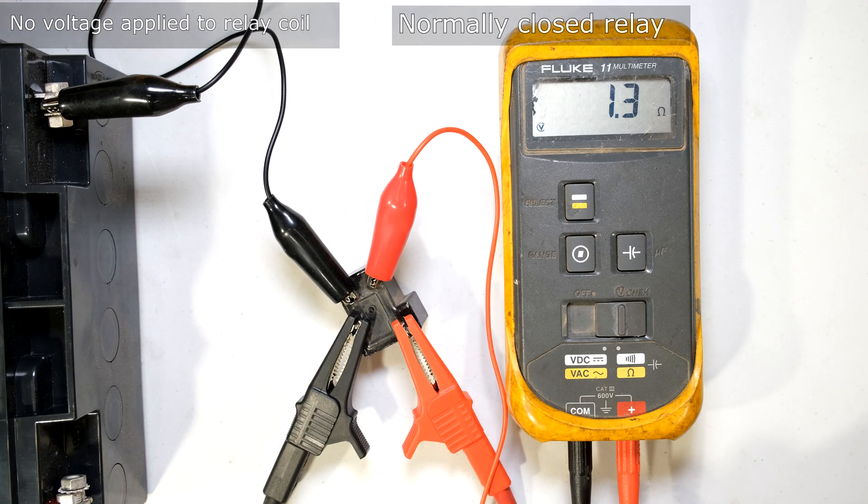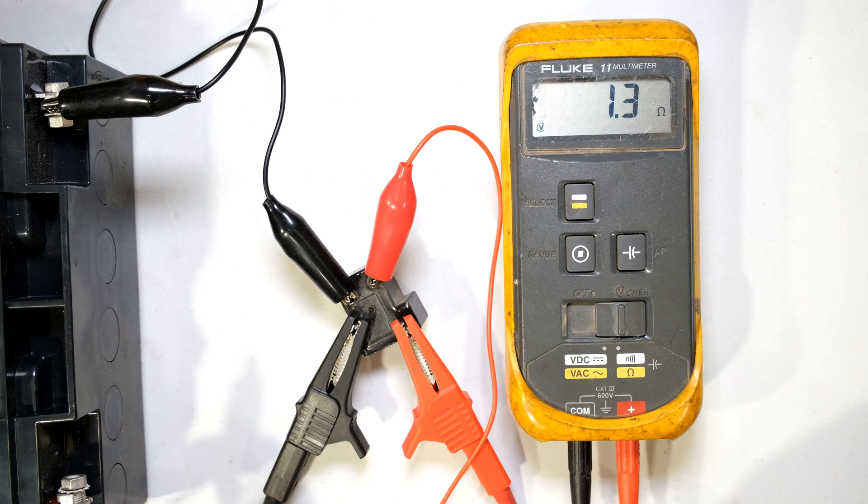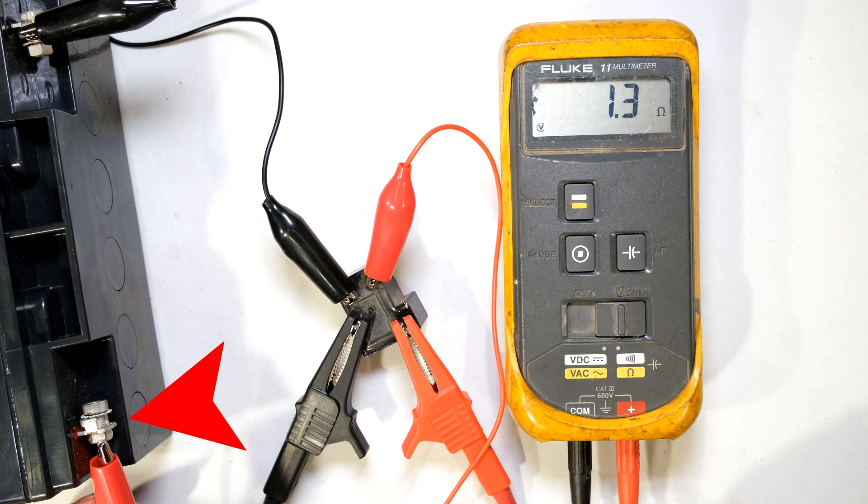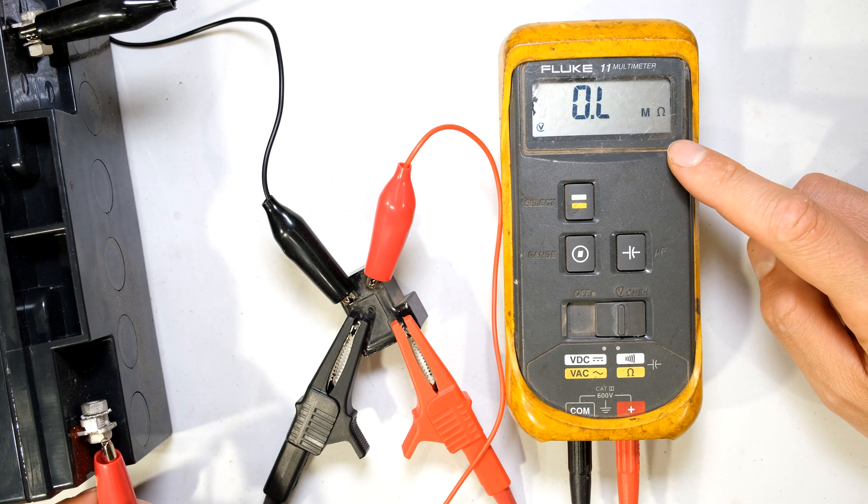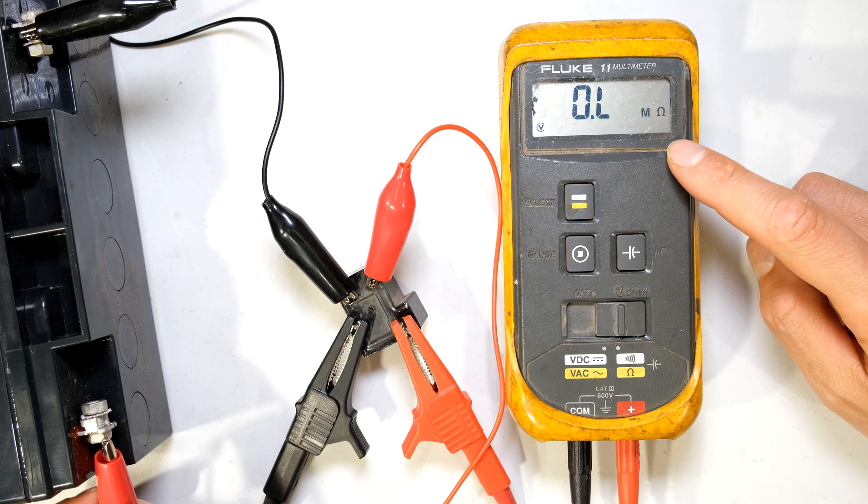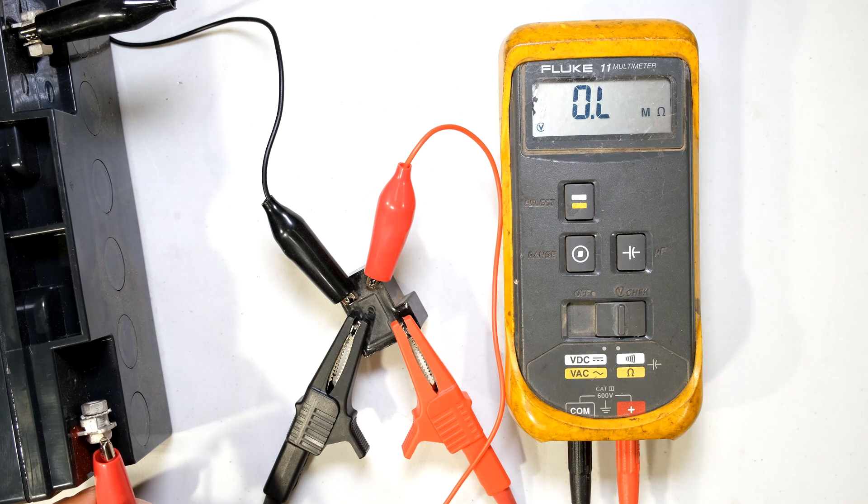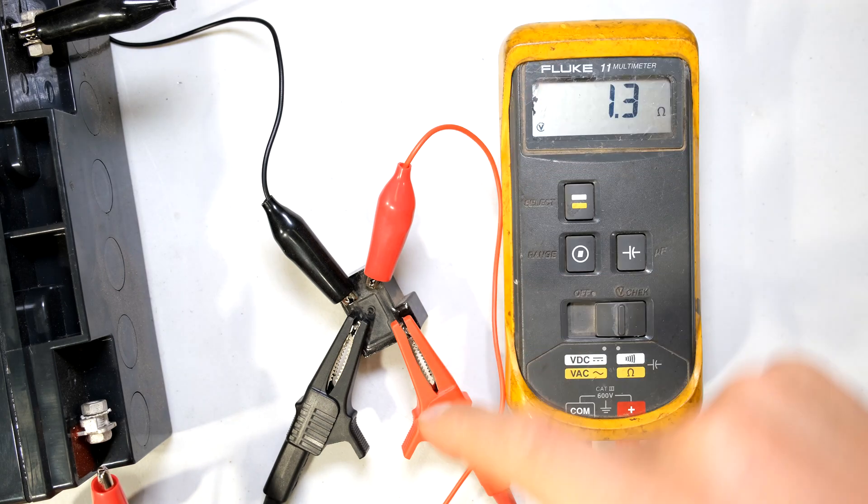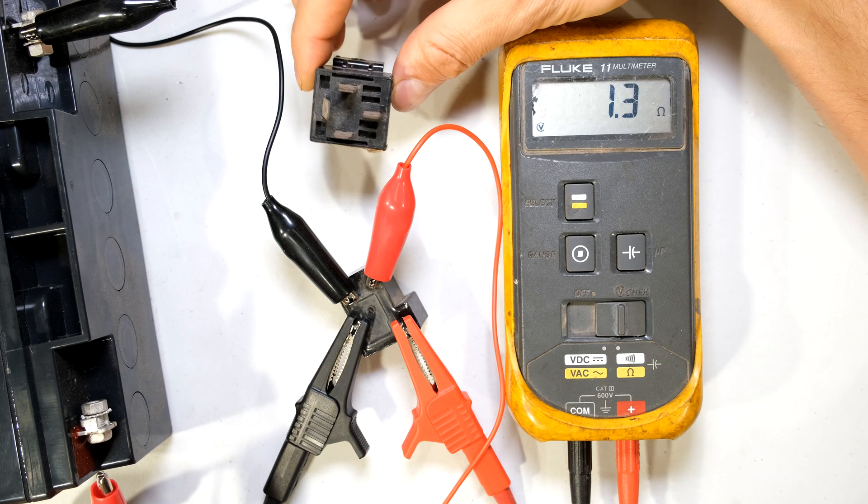Now I'm going to test the relay with the positive and the negative. I'm going to activate the relay by connecting the positive terminal to my battery. Can you see that the ohm value went very high opening the circuit. Meaning that the relay is a normally closed relay. Now when I deactivate the relay. You can see that the resistance went very low again.